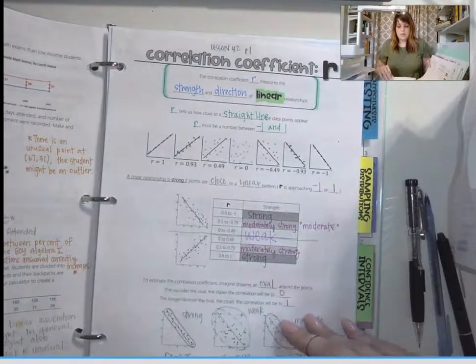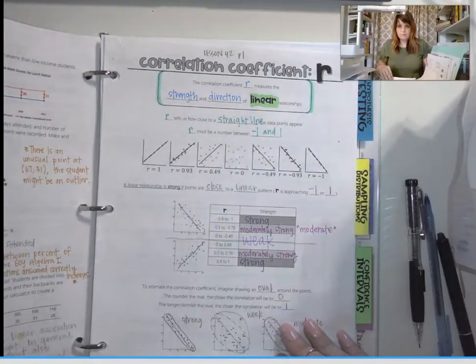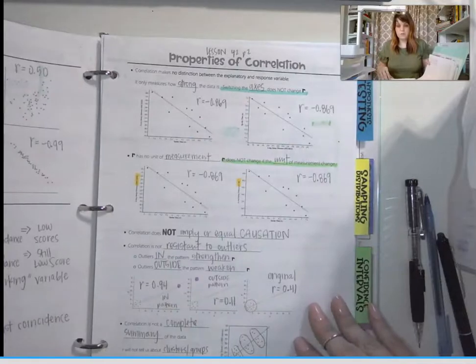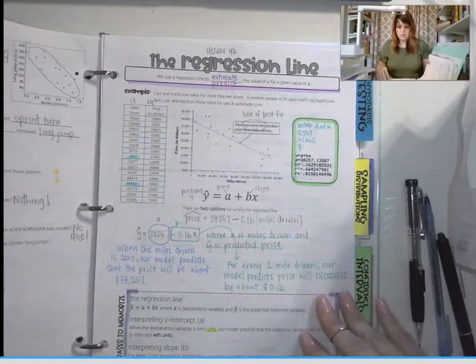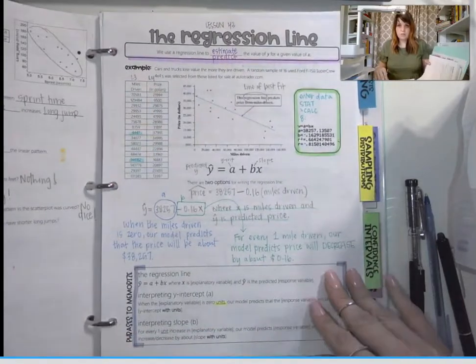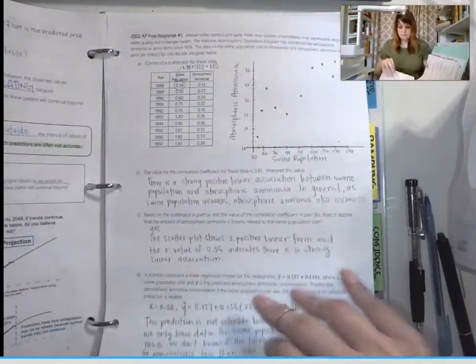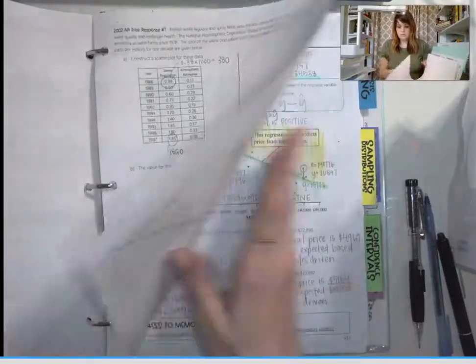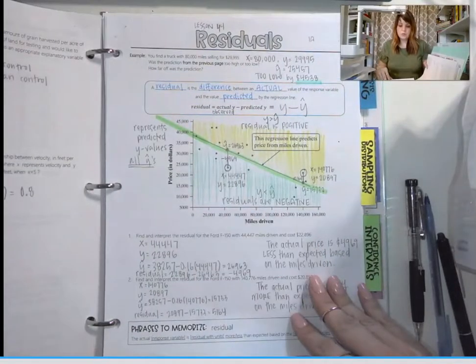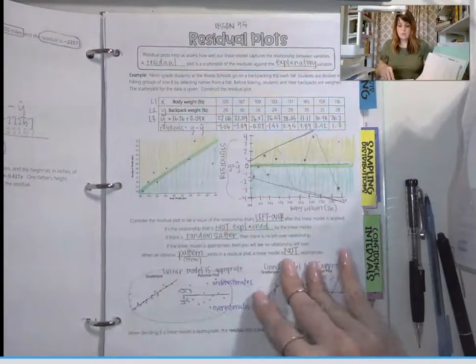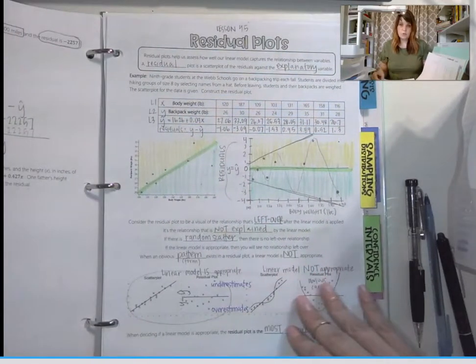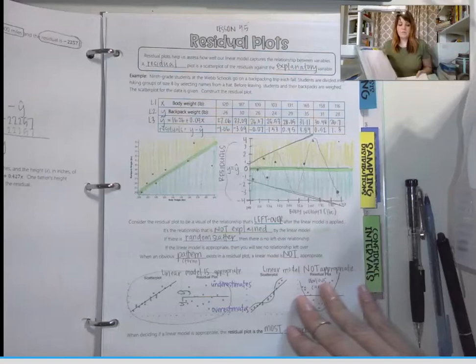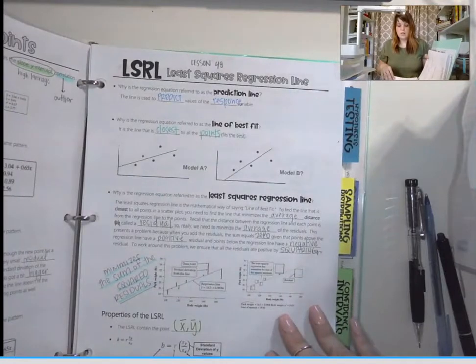Lesson 42 part 1 is R. Part 2 is properties of correlation. Lesson 43 was the regression line. Lesson 44 was results. Lesson 45 was residuals. Lesson 46 is R squared and S. Lesson 47 was influential points. Lesson 48 was the least squares regression line.